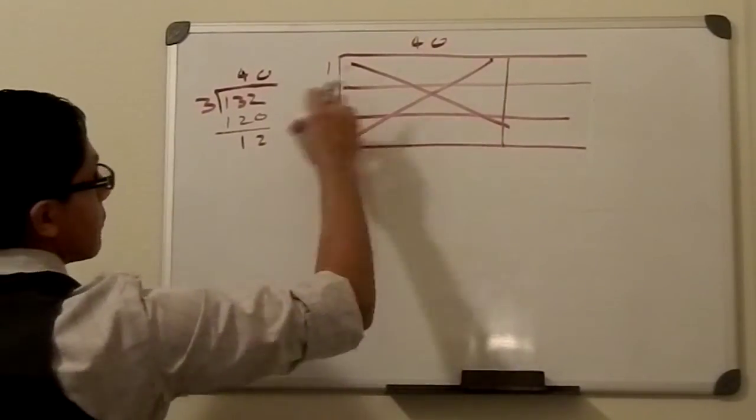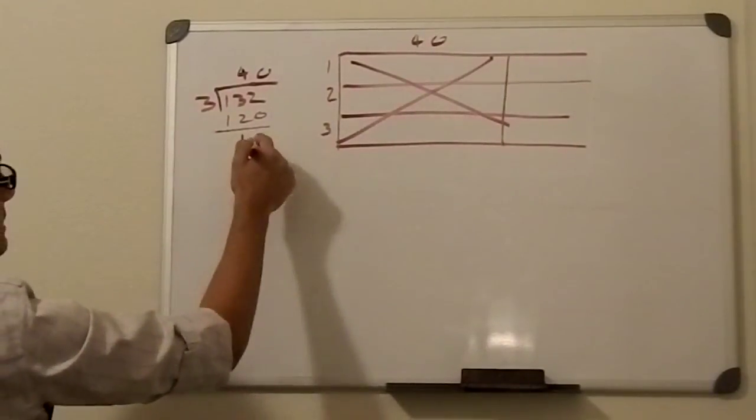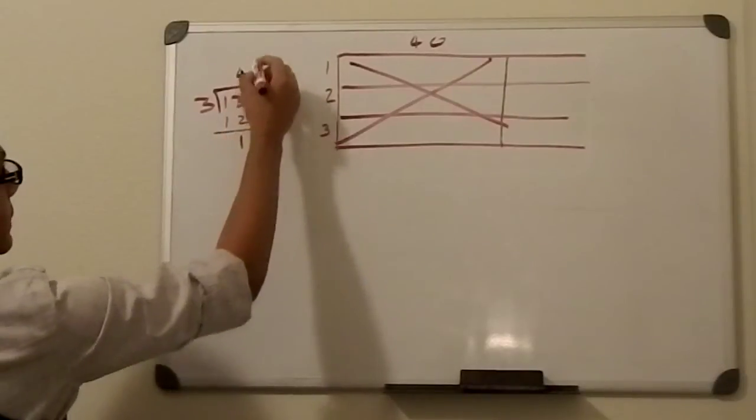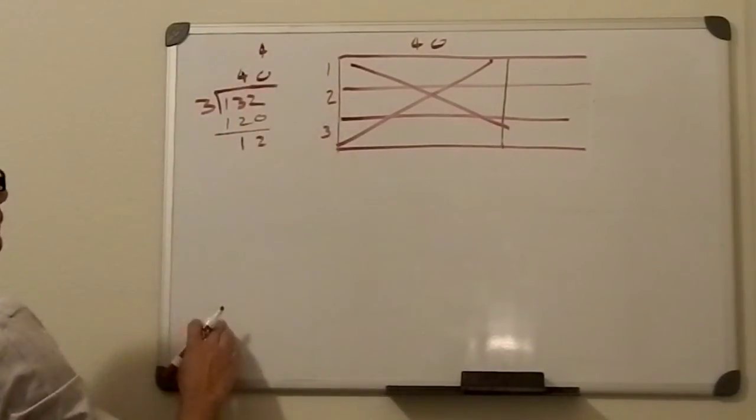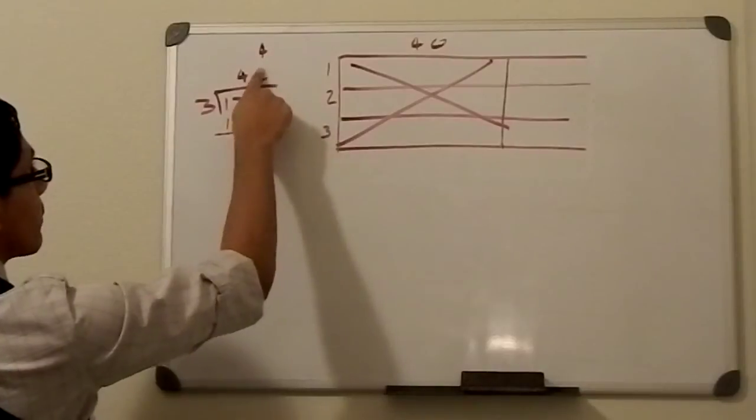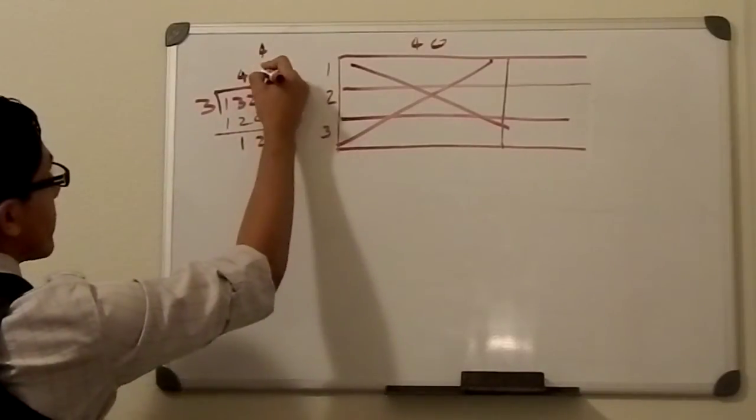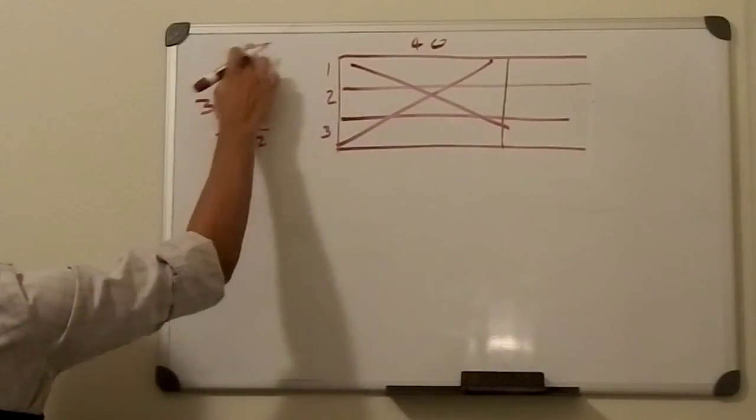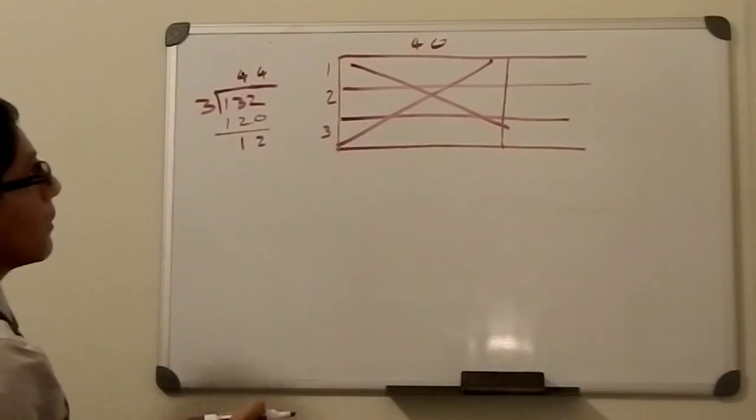And since we know there's three rows, then we divide this again and we get four, right? And the reason that we don't write these here, we just go like this, 44, is because we're going by whole numbers with the place.